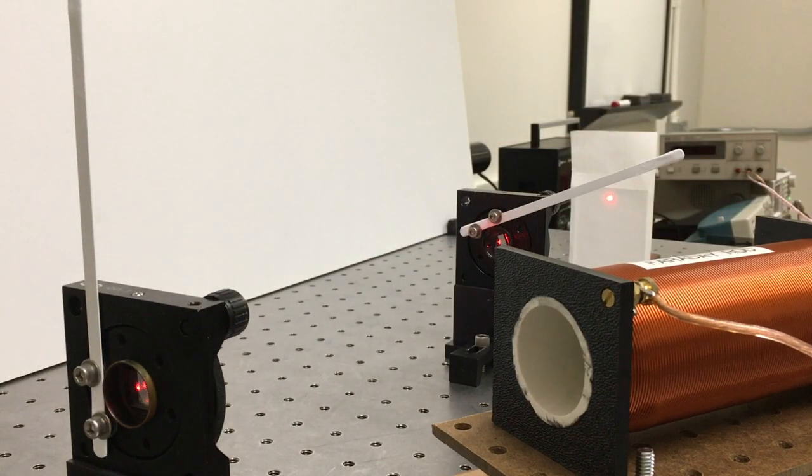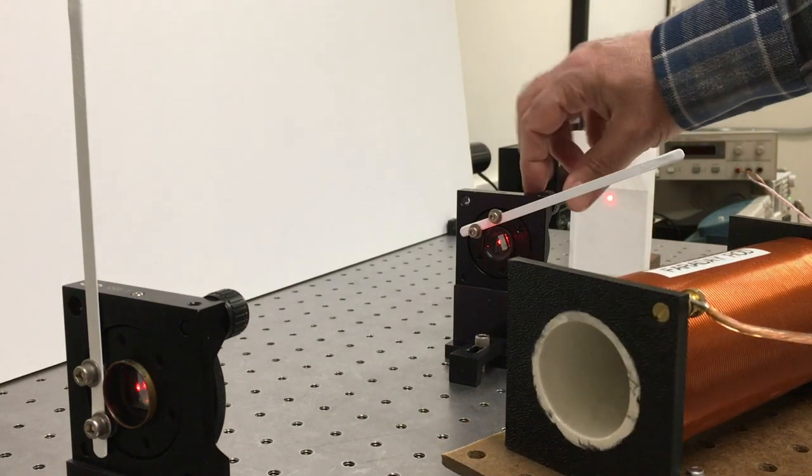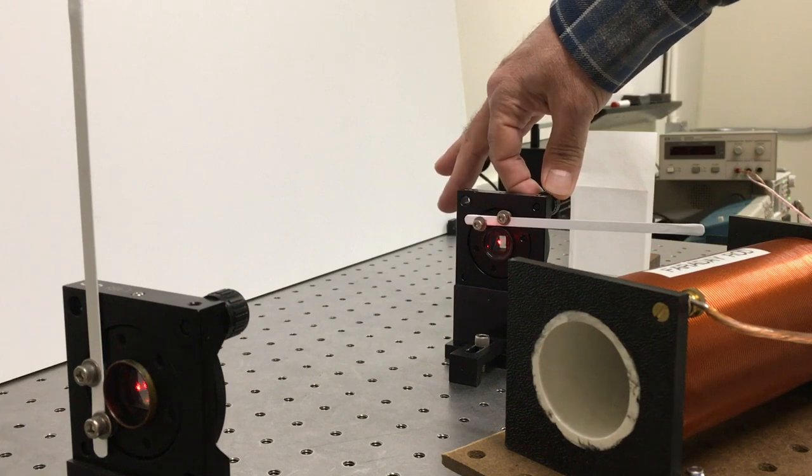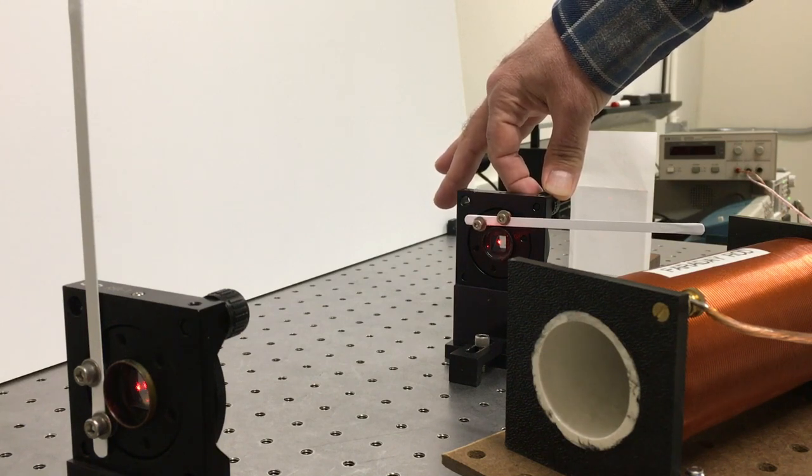So that's already tucked inside the solenoid. First I'm going to cross the polarizers so we're extinct. The beam is blocked.